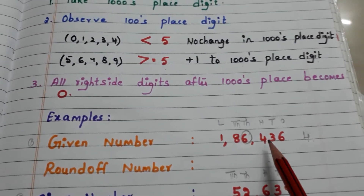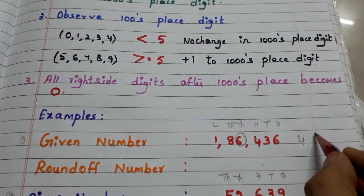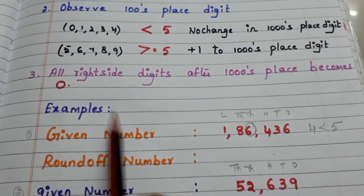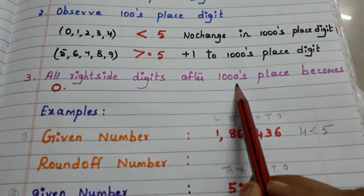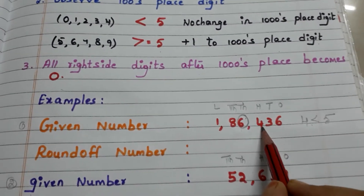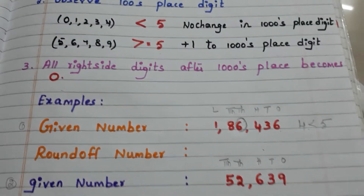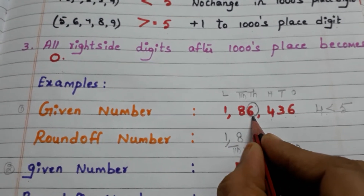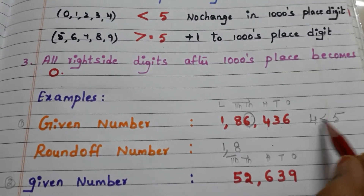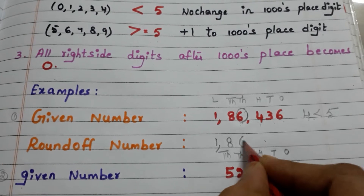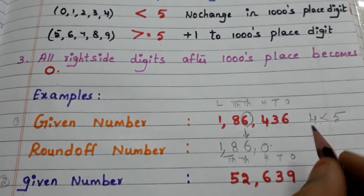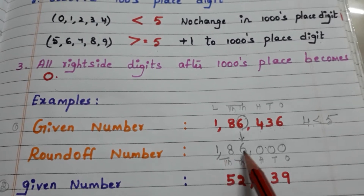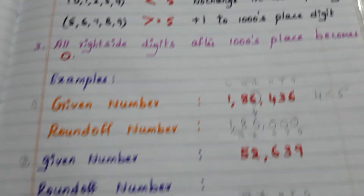In this example, the hundreds place digit is four and it is less than five, so there is no change in the thousands place digit. Step three: all digits to the right of the thousands place — hundreds, tens, and ones — become zero. So the new number is: 1 down, 8 down, no change in thousands place digit (six stays as six), and 4, 3, 6 all become zero. The rounded number is one lakh eighty-six thousand.